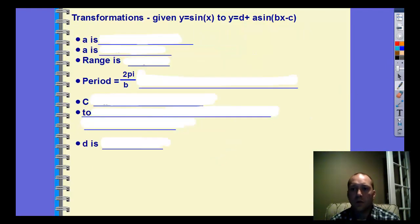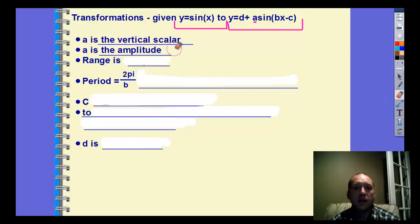Now, transformations, this would be the parent function, and it could also be written like this. And so what's changed in it? The a value, the number in front, which I sometimes call that awesome a value, still is our vertical stretch. So it's the vertical scalar. a is also the amplitude. So that vertical scalar, when it stretches it vertically, it's telling you what the amplitude is going to be. The range is always between the negative a and a, because that a is our scalar.